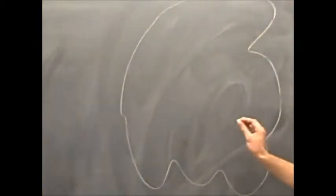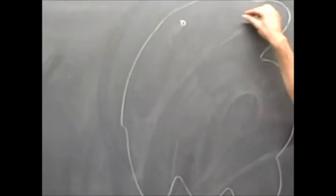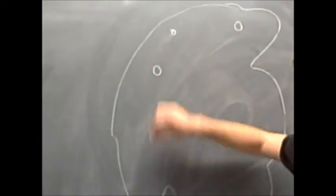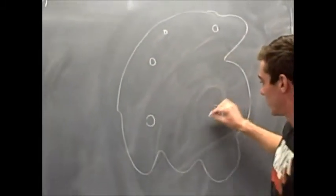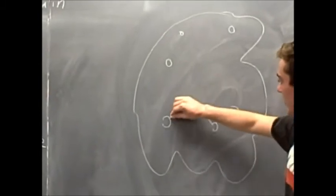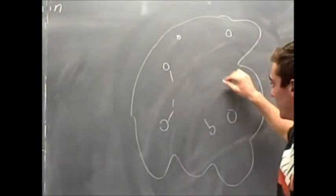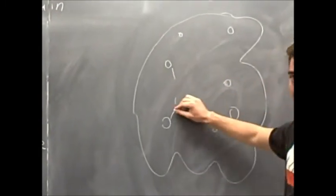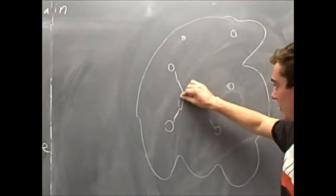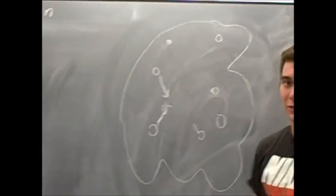So this represents the cloud. And then in the cloud, these are these little particles. Gravity, which we know today, slowly pulls these together to form a denser and denser mass. Eventually, these particles start to collide with each other, starting a process called nuclear fusion.